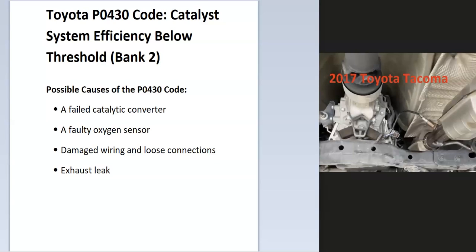Today I'm talking about a Toyota with the P0430 code — what it is and how you go about fixing it. A Toyota P0430 code is a catalyst system efficiency below threshold bank 2. The onboard computer is monitoring the catalytic converter, and if it sees a drop below 95% efficiency, it'll send out this code because it thinks that it's failing.